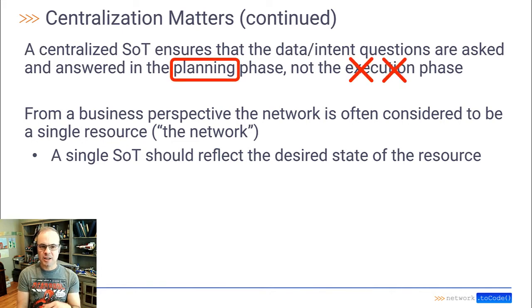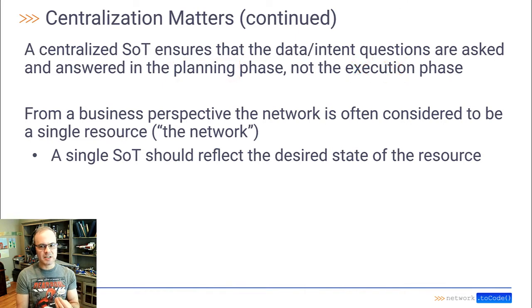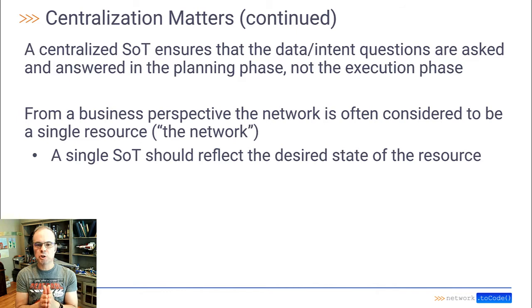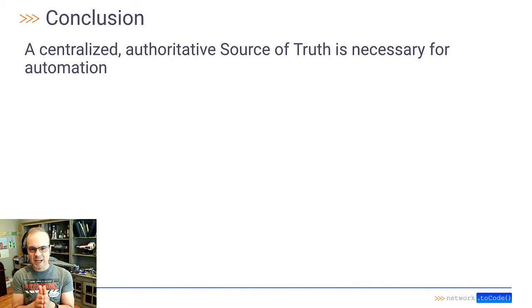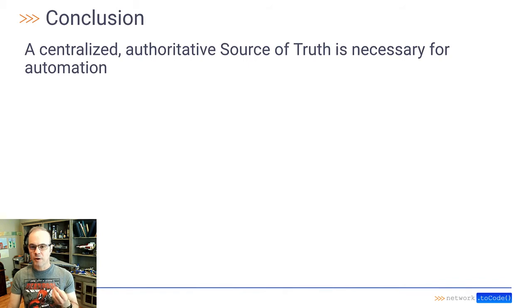Additionally, from a business perspective, the network is often considered to be a single resource. So a single source of truth should reflect the desired state of that resource. From the prior conversation, you can safely conclude that a centralized authoritative source of truth is necessary for an automation framework.